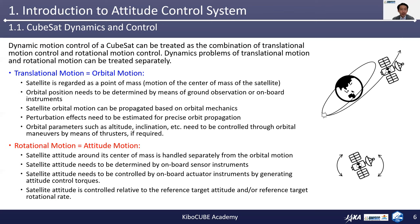For the rotational motion or the attitude motion analysis, the spacecraft attitude around its center of mass is handled separately from the orbital motion. Satellite attitude needs to be determined by onboard sensor instruments and controlled by onboard actuator instruments by generating attitude control torques. Furthermore, the satellite attitude is controlled relative to the target attitude and rotational rate.